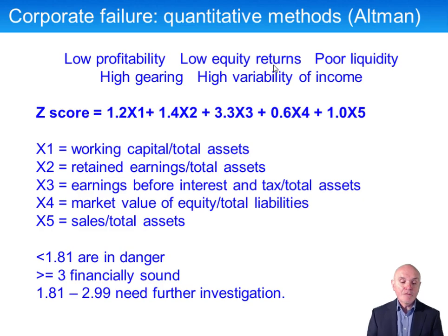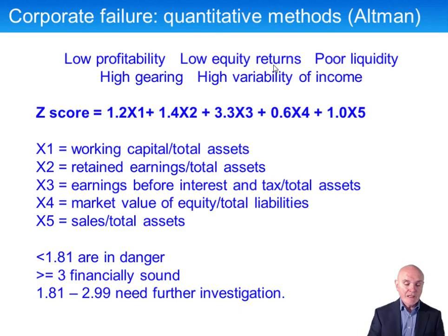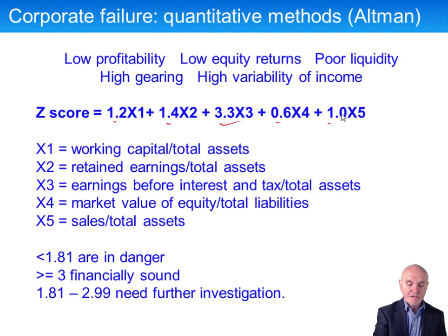The first corporate failure model is a quantitative approach, sometimes called the Altman Z-score. It has to be said that this was devised many years ago, and it was devised purely to do with the financial banking industry. The economy now is very different to what it was all those years ago, and almost certainly it has to be questioned to what extent these weighting factors or coefficients are still valid.